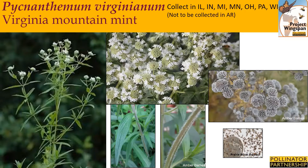Pycnanthemum virginianum, or Virginia mountain mint, typically occurs in moist soils, in wet meadows, and along streams and ponds. It is an erect, many-branched herbaceous perennial that grows two to three feet tall. Its leaves are lanceolate with smooth edges. Its flowers form in profuse, somewhat flat-topped terminal clusters made up of small, white, two-lipped flowers, which bloom in the mid to late summer. All parts of this plant also emit a strong mint-like aroma when crushed. While the flowers are very similar to narrow-leaf mountain mint, the leaves are wider — up to a half inch — and the stems have lines of white hairs along the square edges. Collection time is also in the late summer. The seed heads turn from green to grayish-brown when ripe, and you'll want to cut off the entire seed head and put it in your collection bag to dry.